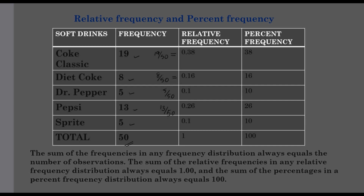The sum of the relative frequencies in any relative frequency distribution always equals 1. Now for percent frequency, we multiply this value by 100. We have relative frequency into 100. Our values are 0.38, 0.16, 0.1, 0.26, and 0.1 — multiplied by 100 gives 38, 16, 10, 26, and 10. The sum of the percentages in the percent frequency distribution is always equal to 100. If we get the sum of 100, we don't have a mistake. That is the way to find the relative frequency and percent frequency of a data set.